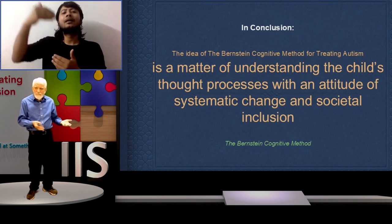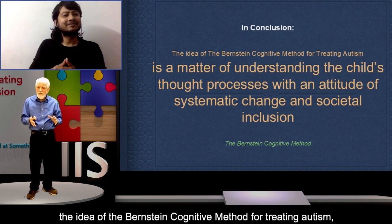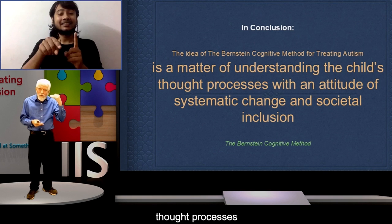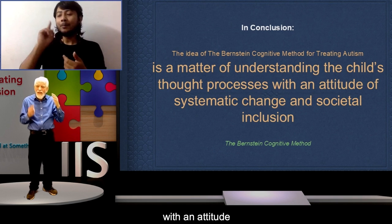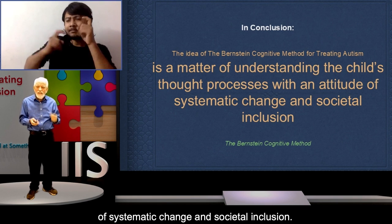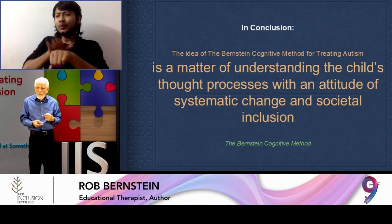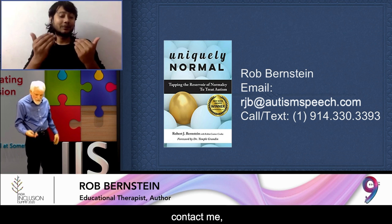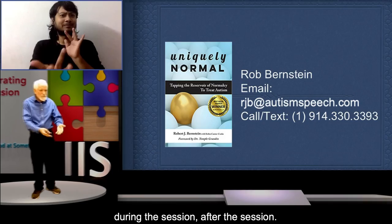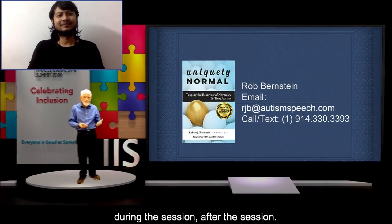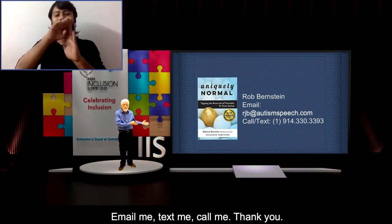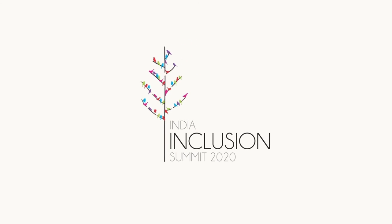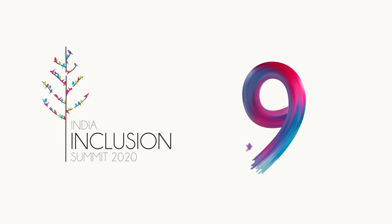In conclusion, the Bernstein Cognitive Method for treating autism is a matter of understanding the child's thought processes with an attitude of systematic change and societal inclusion. Thank you. You're welcome to contact me during or after the session — I'd love to hear from you. Email me, text me, call me.